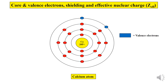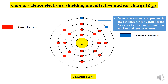The valence electrons are highlighted in blue and the core electrons in red to distinguish them from each other. Valence electrons are present in the outermost shell, also called the valence shell. They are far from the nucleus and easy to remove because they experience a very weak attractive force towards the positively charged protons, so less energy is required to remove them.